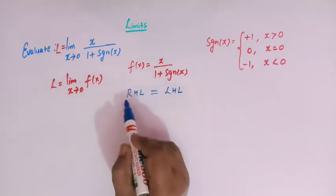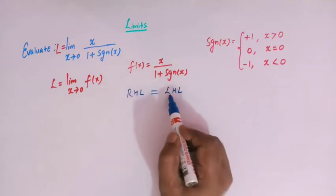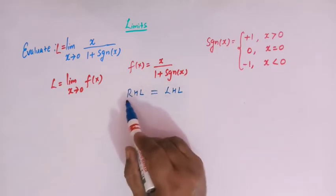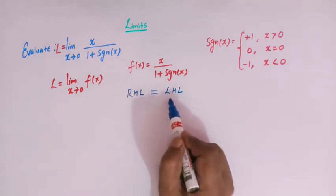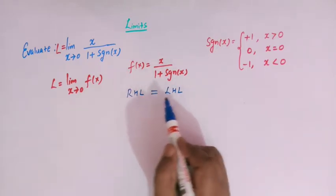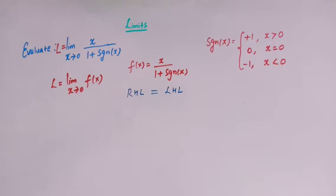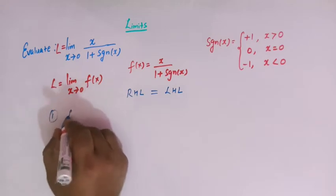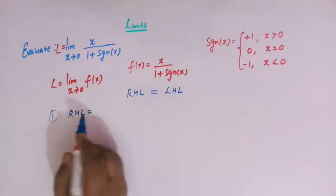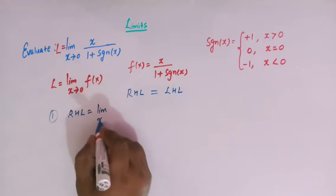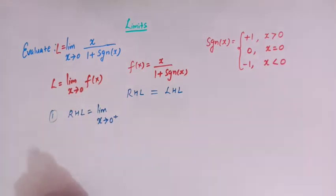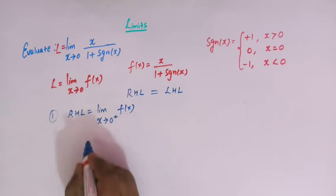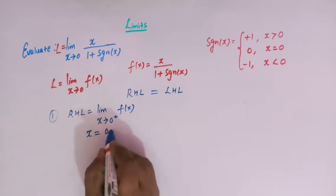We will first find the right hand limit of this function, then find the left hand limit, and then analyze whether they exist and are equal. The right hand limit is denoted by RHL using the notation limit x tends to 0 plus of f of x.